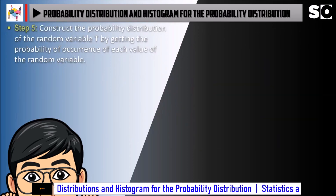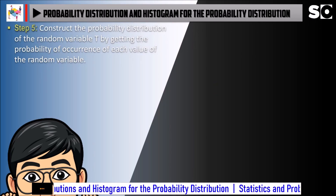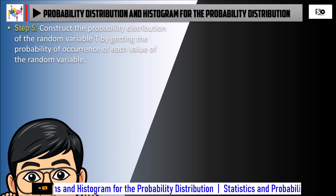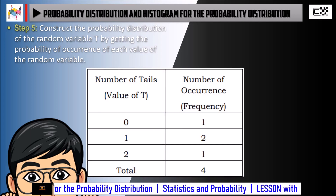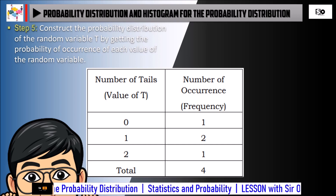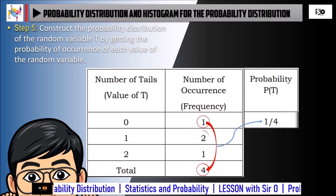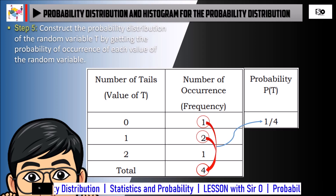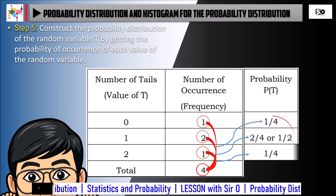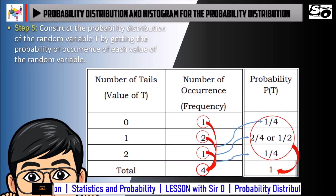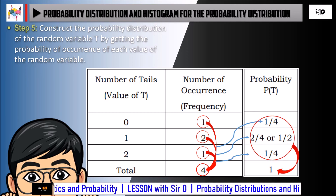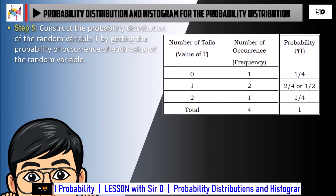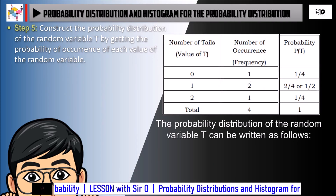Step 5: Construct the Probability Distribution of the Random Variable T by getting the probability of occurrence of each value of the random variable. Copy the table in Step 4 and add an additional column, which is the probability. The value will be the frequency over the total. For the total row, add all the values in the probability column. We can now write the probability distribution of the random variable T.